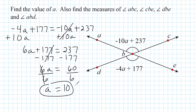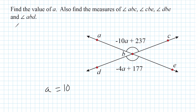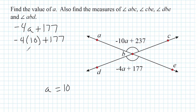Now that we know A equals 10, let's substitute it into one of our two expressions to find the angle measure. We take negative 4A plus 177 and substitute A with positive 10. The product of negative 4 and positive 10 is negative 40. Adding that to 177 gives us a total of 137.